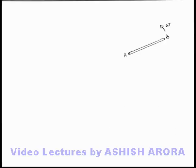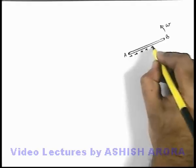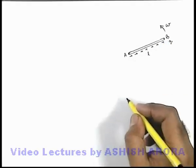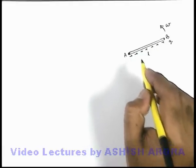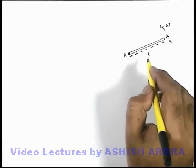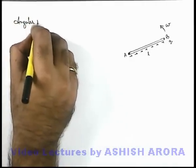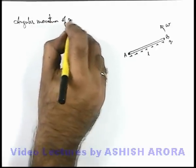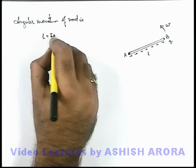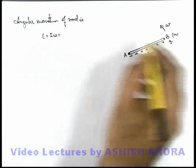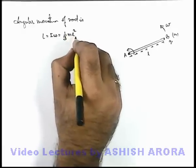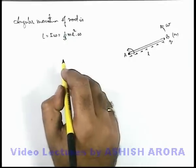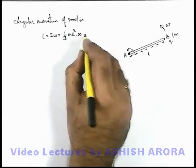In continuation, let's discuss a uniformly charged rod AB, which is positively charged with total charge q and has length l. About end A, it is rotating at angular speed ω. To find the ratio of magnetic moment to angular momentum, we first find angular momentum directly. The angular momentum L = Iω, and for a rod of mass m rotating about one end, its moment of inertia is (1/3)ml². So L = (1/3)ml²ω — call this equation 1.